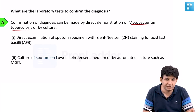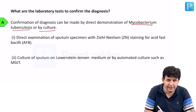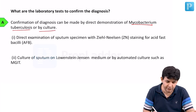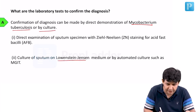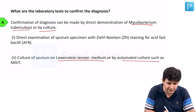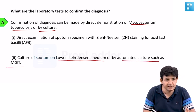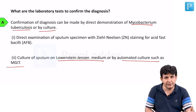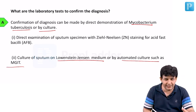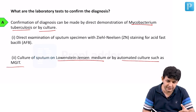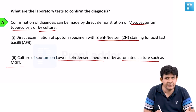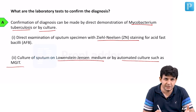You can go for direct examination by ZN staining of the sputum, or by culture. Culture can be done on LJ medium, or nowadays using automated methods like MGIT (Bactec, BacT/Alert) — liquid culture media. ZN staining is important; the modified ZN staining is also termed the Kinyoun staining.